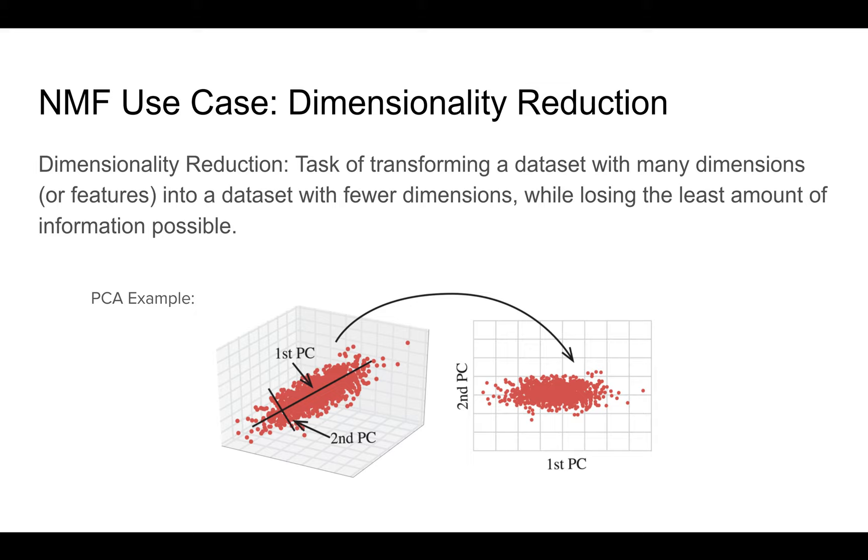So as I just explained with NMF, you can have a number of basis vectors. And if this number of basis vectors is less than the original number of dimensions or features in your original data set, then essentially you already have dimensionality reduction going for you.